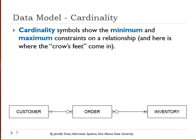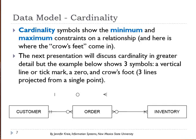Then we have the concept of cardinality. Cardinality symbols show the minimum and maximum constraints on a relationship, and this is where you see the crow's foot. We'll discuss cardinality in much greater detail in the next video, but in the diagram we see symbols representing minimum and maximum constraints. The zero and the crow's foot represent the relationship of customer to order, while the tick mark represents order to customer. Similarly, symbols on the other side represent the inventory relationship to order and the relationship of order to inventory.